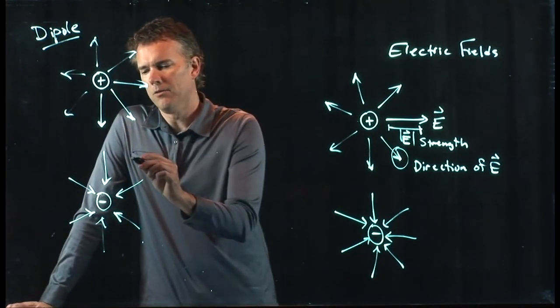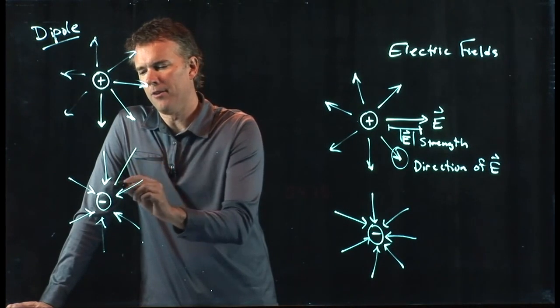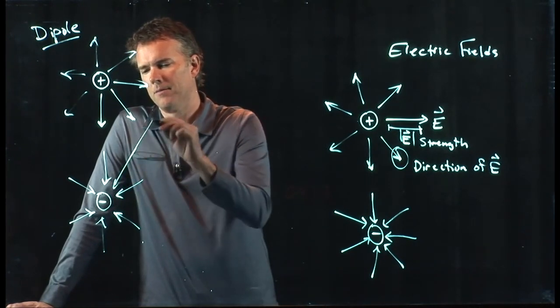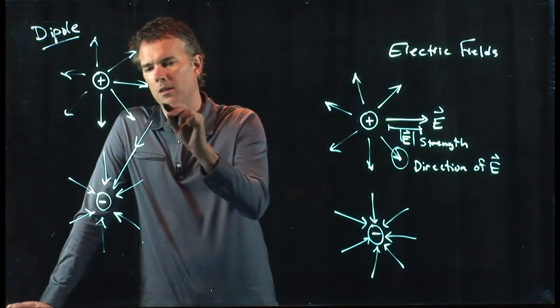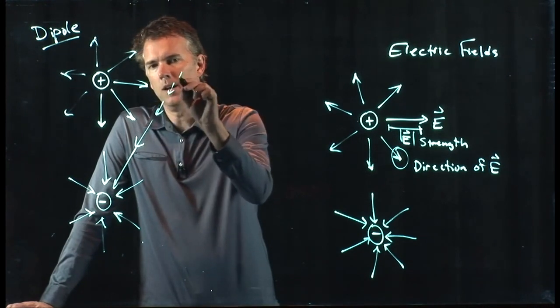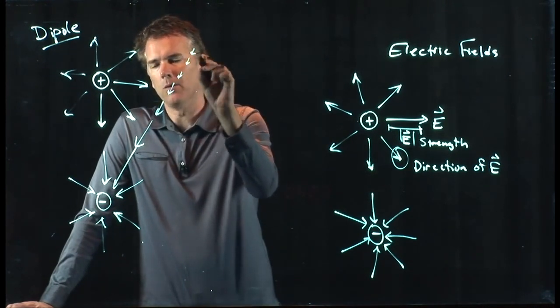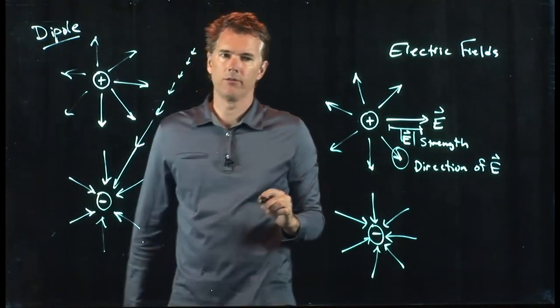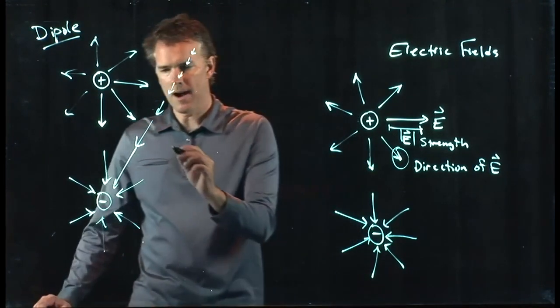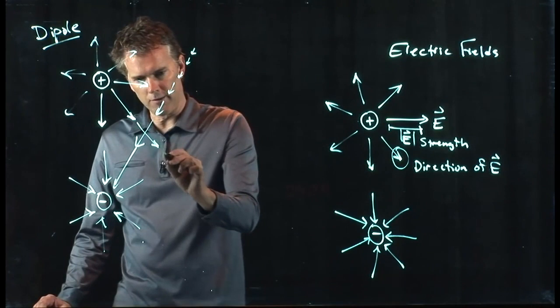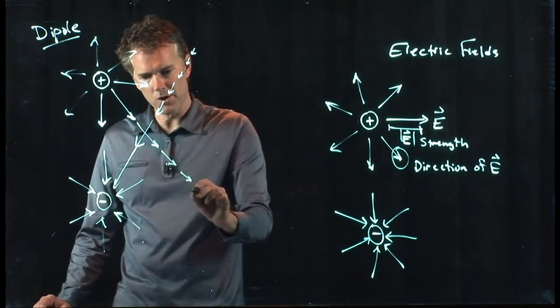Because these field lines really extend forever. We can draw another one and another one and another one and it gets smaller as it goes out, of course, but they go on forever. The positive one goes on forever and just gets shorter as you go.